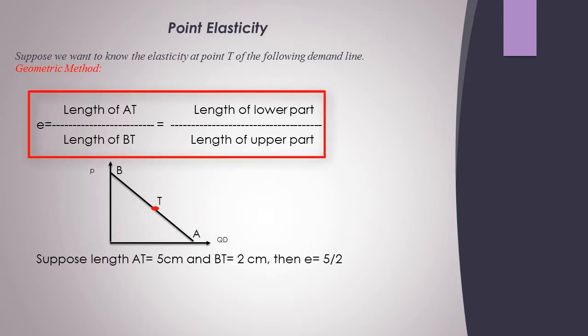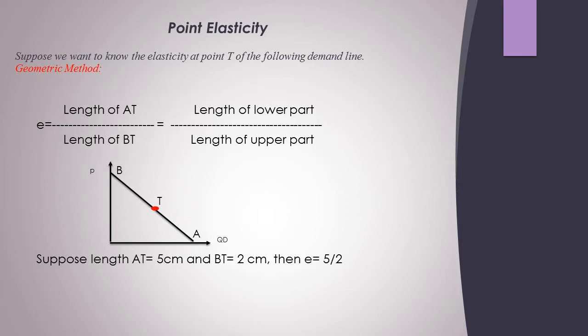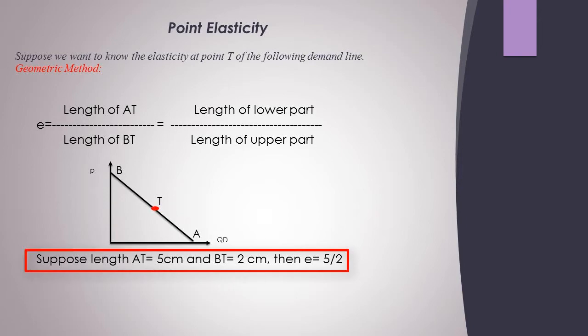We calculate point elasticity using the geometric method. The formula is: length of AT divided by length of BT. For example, if the length of AT is 5 centimeters and the length of BT is 2 centimeters, divide 5 by 2 to get the elasticity at point T, marked in red. Similarly, you can calculate elasticity at other points.